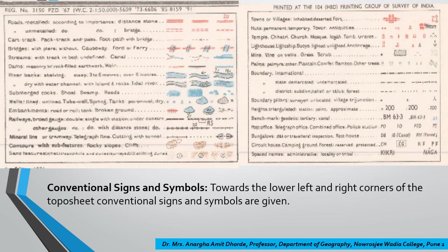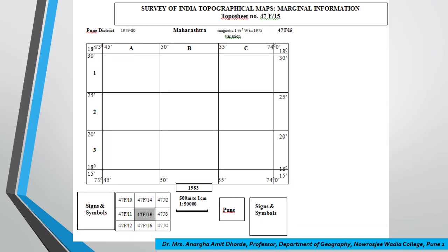The conventional signs and symbols are provided towards the lower left and right corners of the toposheet. They include different kinds of roads, water bodies, railways, elevation features, land features like rocky outcrops, and settlements. Certain letterings and figures mention features like post offices, telegraph offices, dak bungalows, and inspection bungalows. We will look at signs and symbols in detail in another exercise.